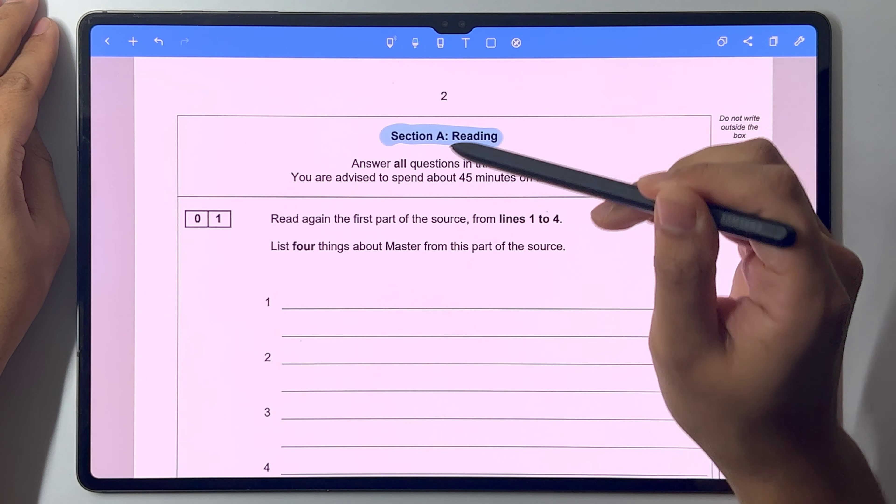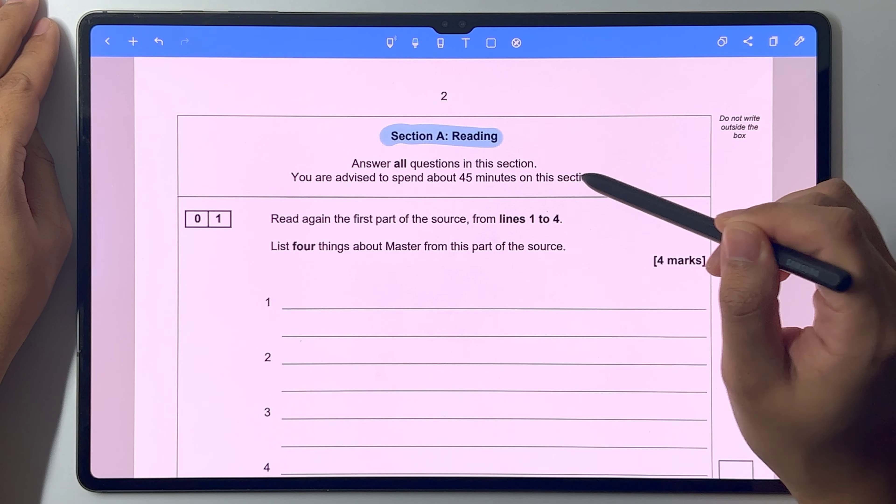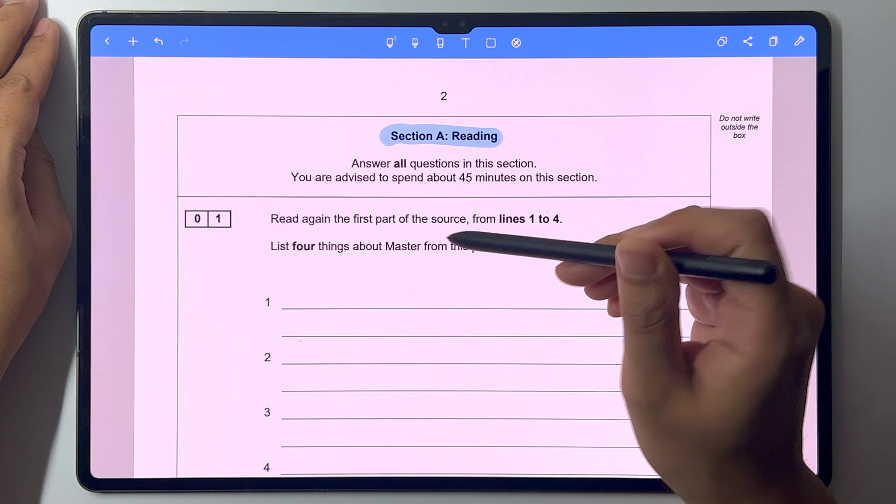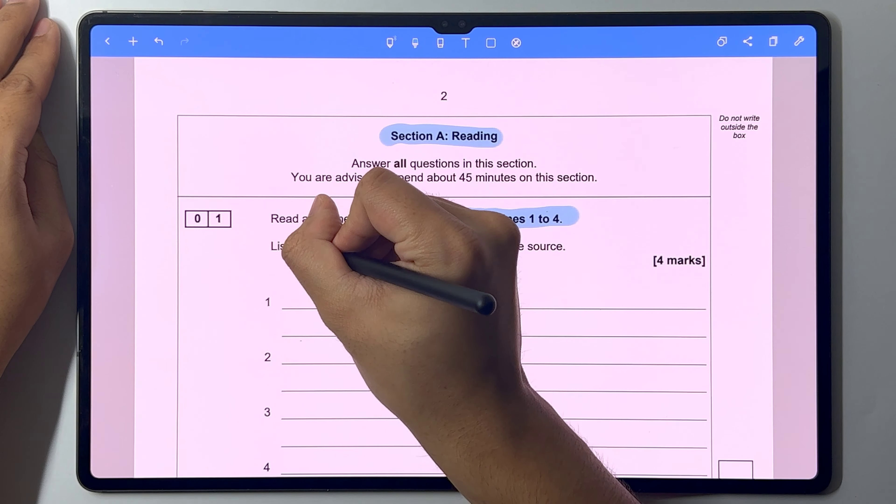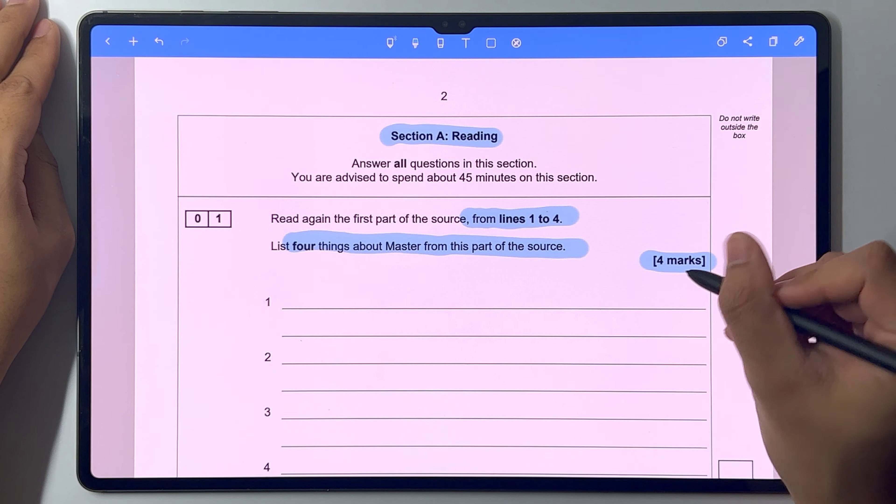Reading. Answer all questions in this section. You are advised to spend about 45 minutes on this section. Read again the first part of the source from lines one to four. List four things about master from this part of the source and it's worth four marks.